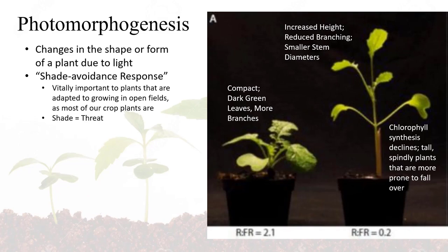Thus, our plants have evolved a shade avoidance response. This is particularly true for plants adapted to growing in open fields, which most of our crop plants have done. In photomorphogenesis, there is a visible difference between plants grown in full sun — which are more compact, branchier, and have darker green leaves due to more chlorophyll synthesis — compared to plants grown in shade, which are generally taller and spindly, with reduced branching and less chlorophyll, giving them a more pale green color.